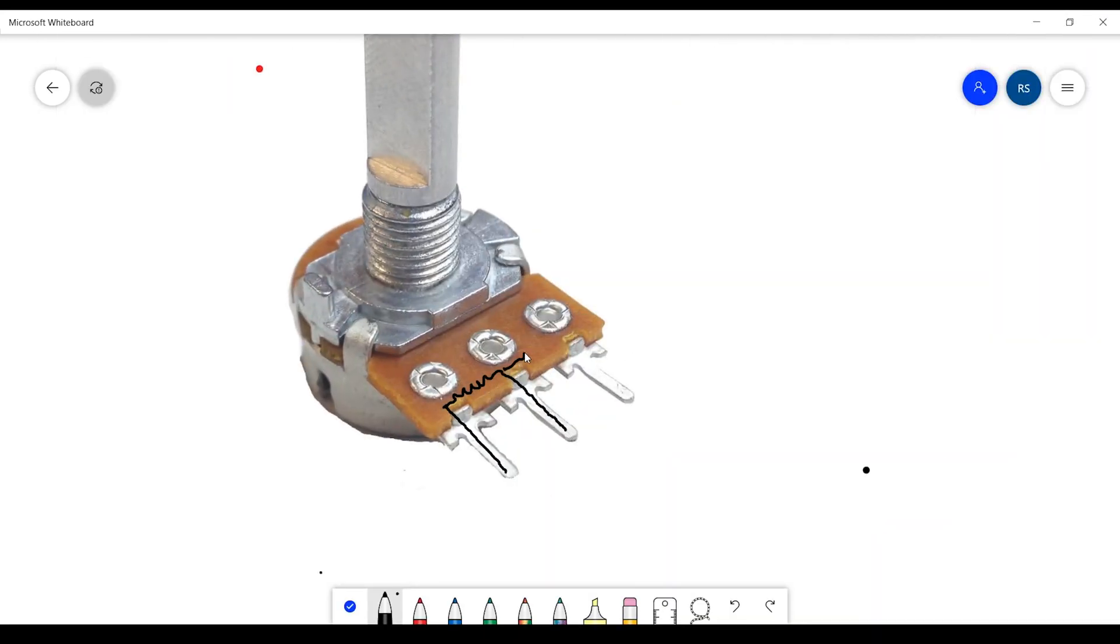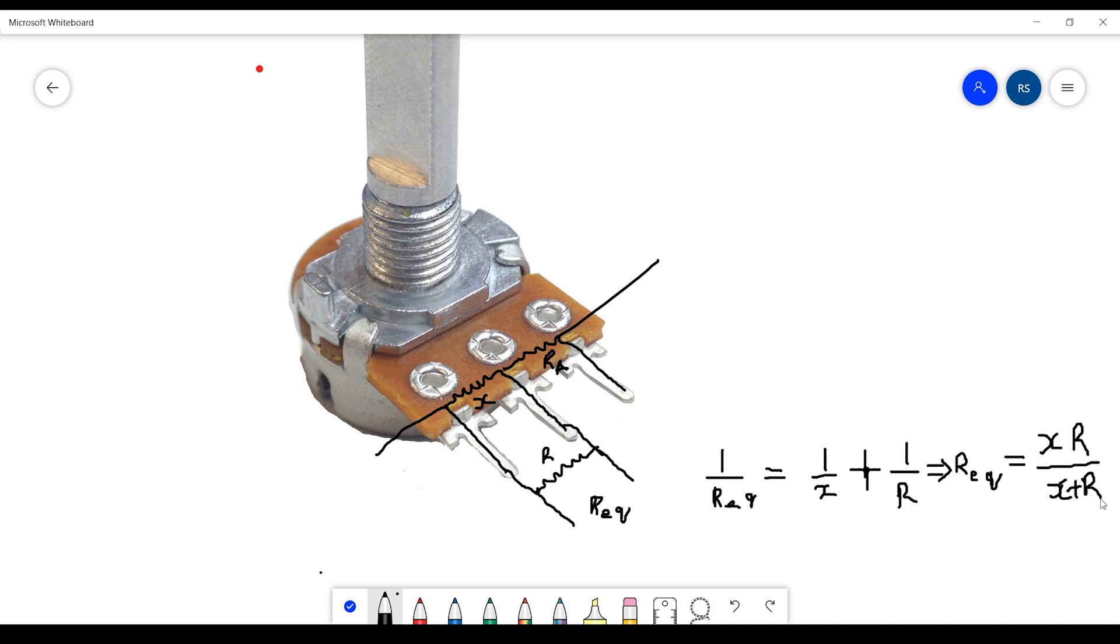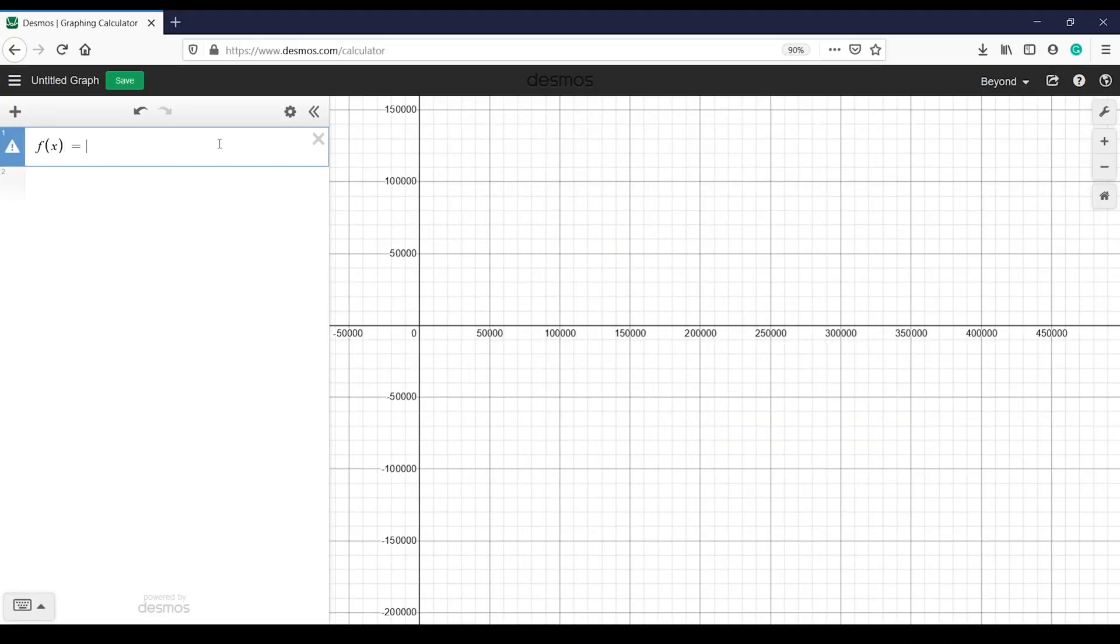Though tapering the resistive element is an interesting way to create logarithmic pots, there is another easy and interesting way that we can create log pots, i.e. using linear pots. Here is a variable pot and now on connecting a fixed resistor parallel to the variable output, the equivalent resistance would be rx by r plus x. And now observing the graph of rx by r plus x, we see that on choosing the right resistor r, we can approximate the graph to be logarithmic.